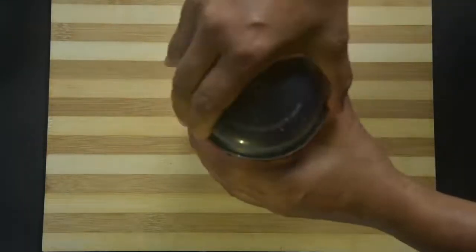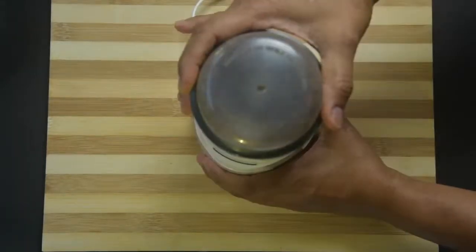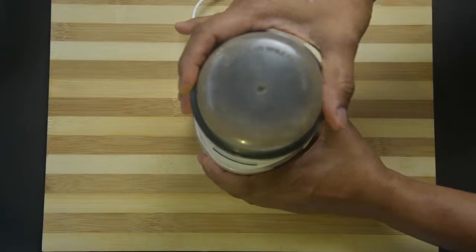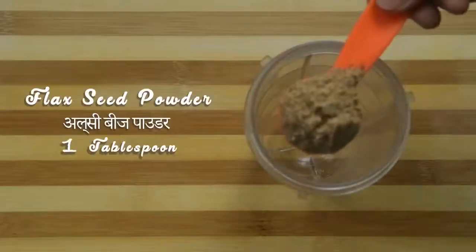Make a fine powder of the flax seeds. Take this fine powder to a wet jar of a mixer grinder.